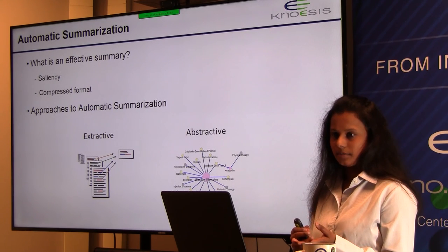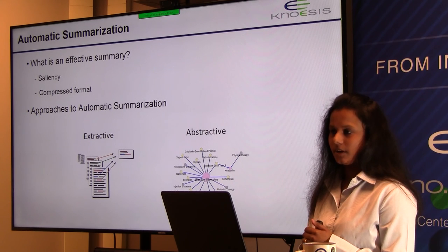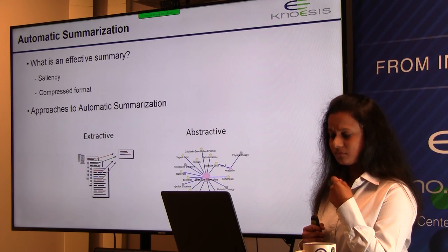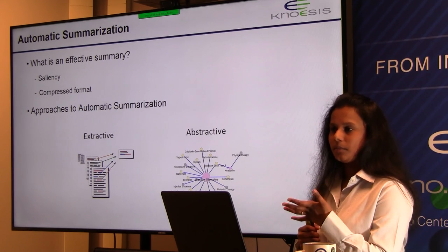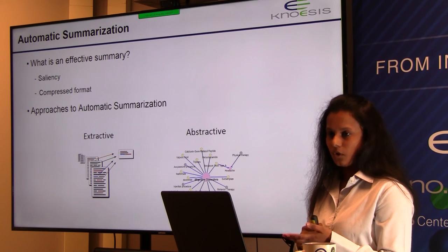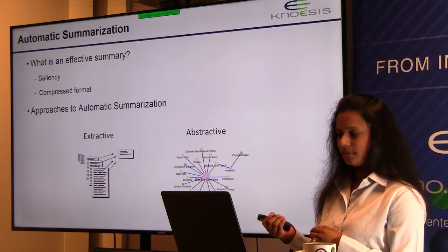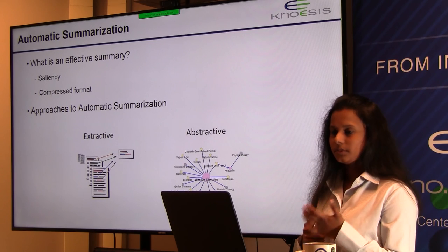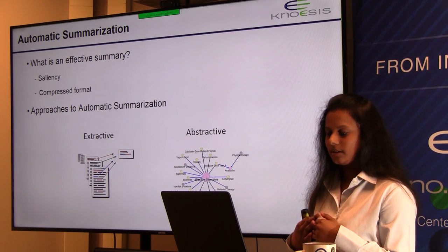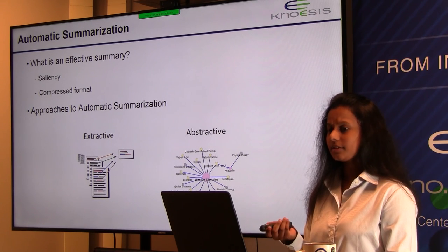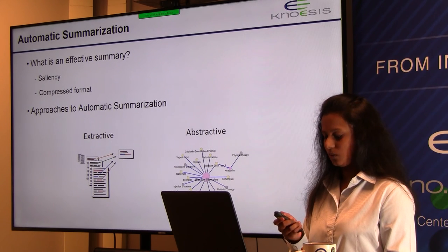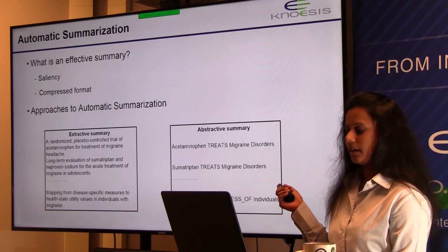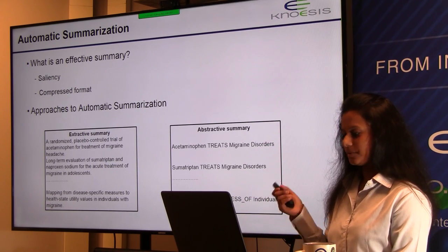In the general scope of automatic summarization, an interesting question is: what is an effective summary? An effective summary conveys the most important or salient information from the source in a compressed and concise format. There are two techniques: extractive summarization, where the most important sentences are added to the summary verbatim; and abstractive summarization, where summaries are an abstract condensed representation of the source. Semantic Medline itself adopts the abstractive summarization approach.